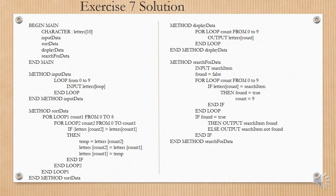Then method sort data is basically a selection sort, very similar to how you do it in Java. For loop one, count one from 0 to 8, which is one below the end of the array. For loop two, count two from 0 to count one. If letters count two is greater than letters count one, then we swap the two letters around using temp.